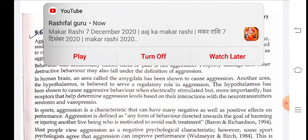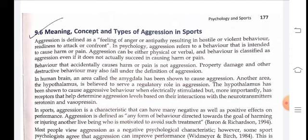In our brain, an area called the amygdala has been shown to cause aggression. Another area, the hypothalamus, is believed to serve a regulatory role in aggression. The hypothalamus has been shown to cause aggressive behavior when electrically stimulated, and more importantly has receptors that help determine aggression level based on their interaction with neurotransmitters, serotonin, and vasopressin.